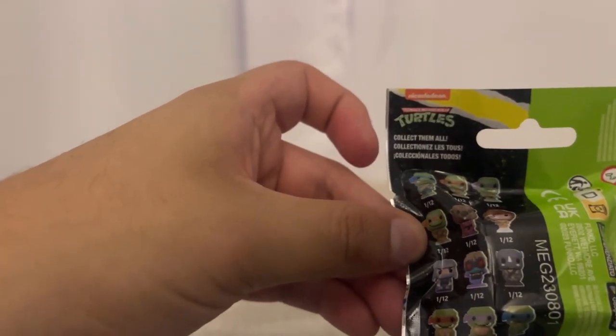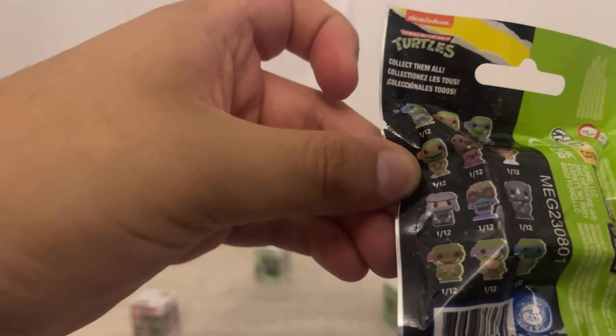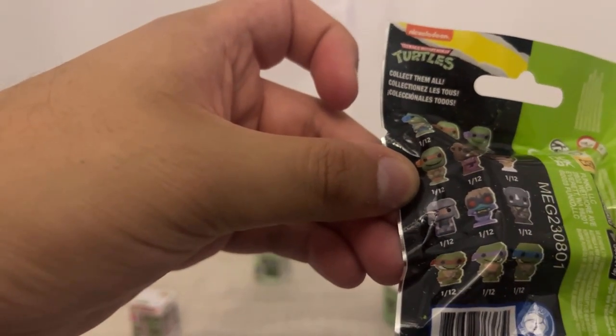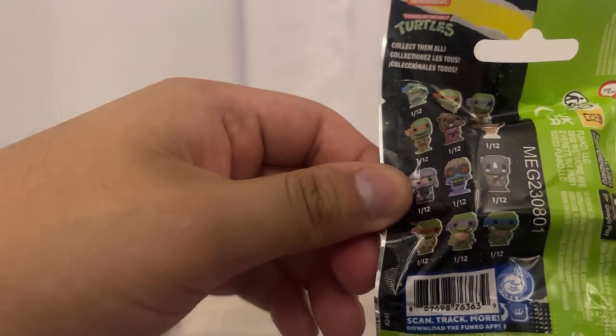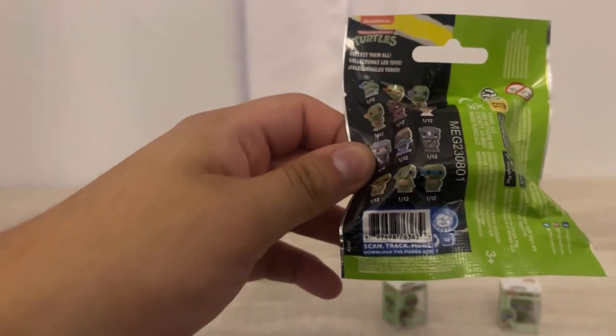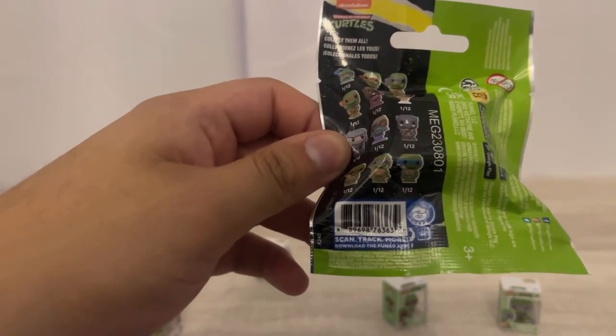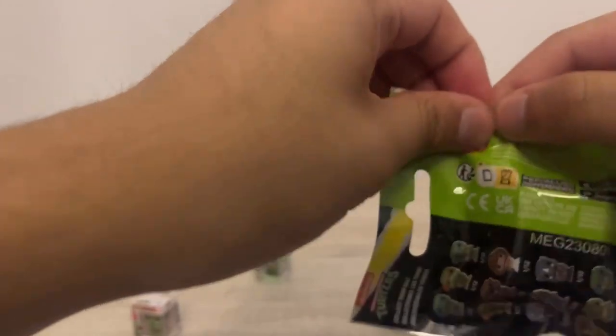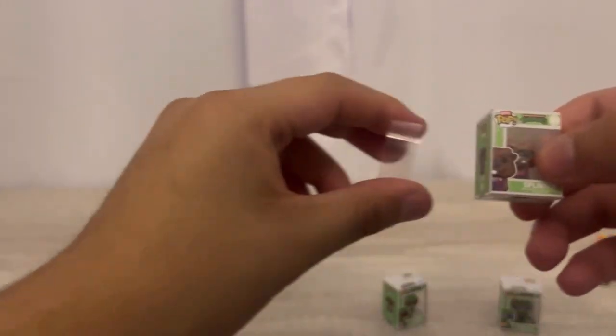Four normal turtles. Raffaeo. Splinter. Baxter Stockman. Shredder. Rocksteady. And three Digital Turtles. Bebop. And how could this be without Bebop and the show without Mikey. Splinter.